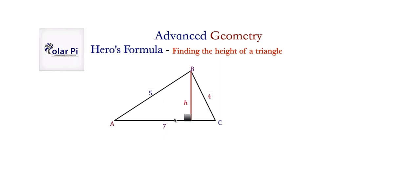what we can do is we can use Hero's formula in tandem with the traditional one-half base times height formula to solve for a missing height of a triangle, given all three sides of the triangle. Here's what I mean.